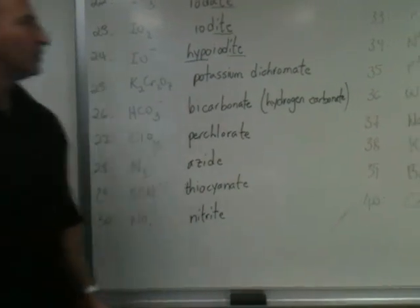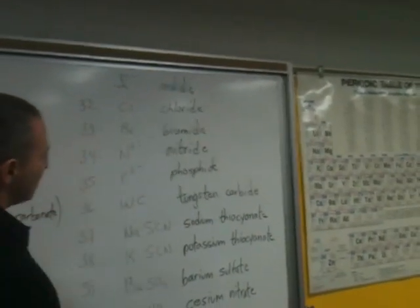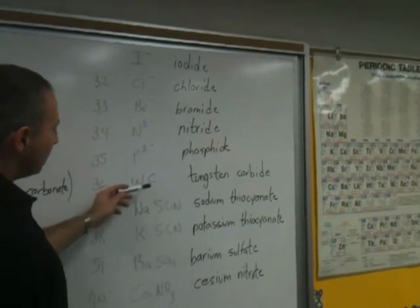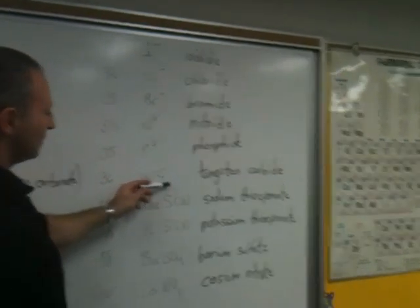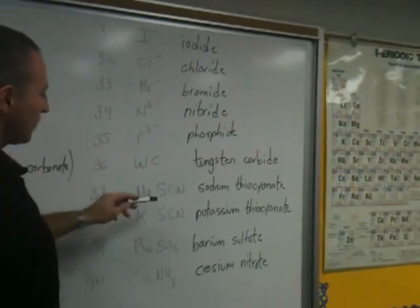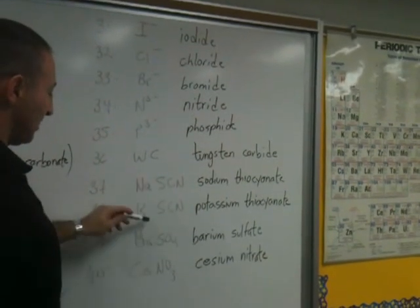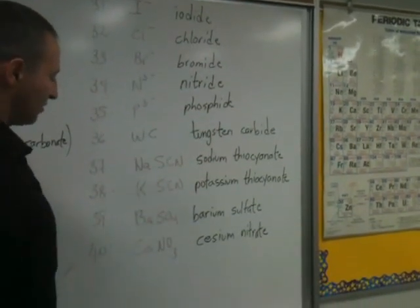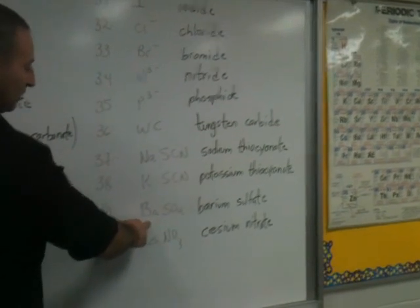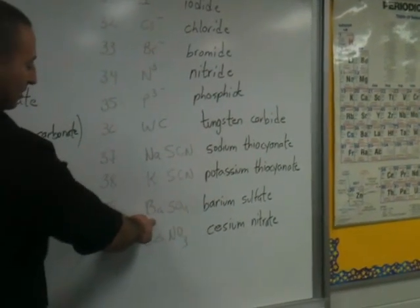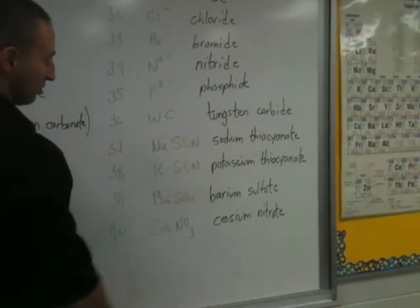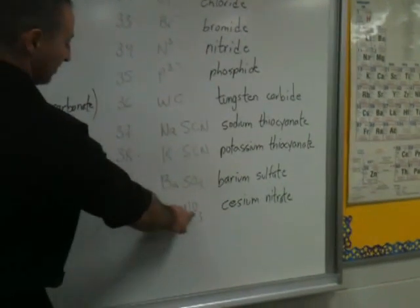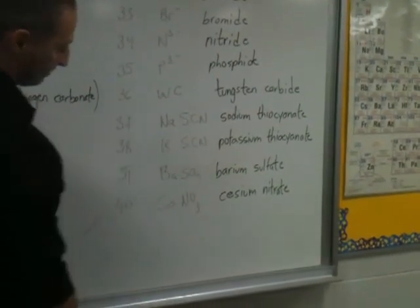This is nitrite, iodide, chloride, bromide, nitrite, phosphide. This is tungsten carbide. Sodium thiocyanate, potassium thiocyanate, barium sulfate — sulfate is minus two, therefore barium is plus two, and as a group two metal we know it has to be plus two. Finally, cesium nitrate. Thank you.